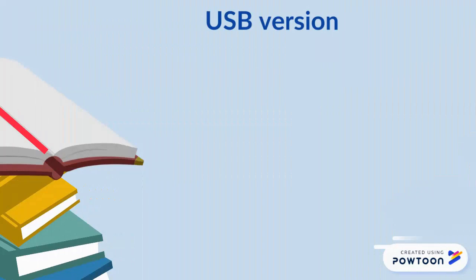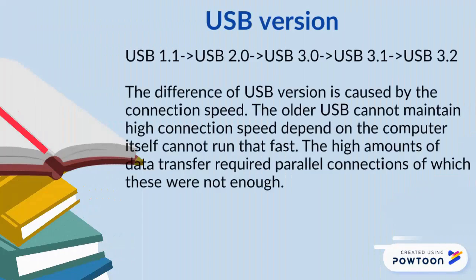Next, we want to talk about the USB versions. There are 5 USB versions we use to compare: USB 1.1, 2.0, 3.0, 3.1, and 3.2. The difference between USB versions is caused by the connection speed. Older USB versions cannot maintain high connection speeds depending on what the computer itself can support. Higher amounts of data transfer required parallel connections, which older versions do not provide.